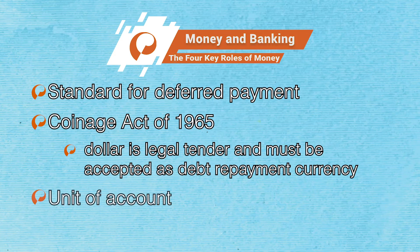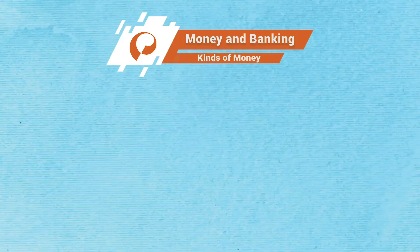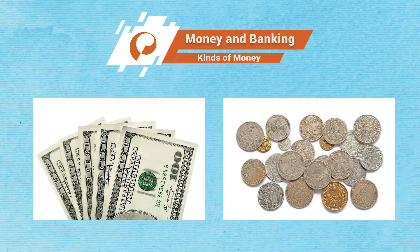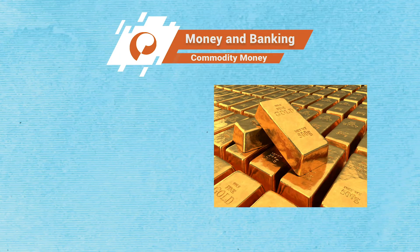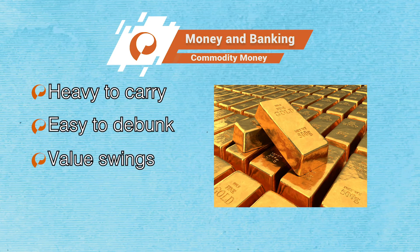Finally, money is the unit of account — the reference measure to set prices and to evaluate important economic indicators. Throughout history, societies have used three kinds of money. In past centuries, people have used various commodities like gold and silver as money. Commodity money is inconvenient because it is heavy to carry, it is easy to debunk, and its value swings with changes in the demand and supply of the commodity.